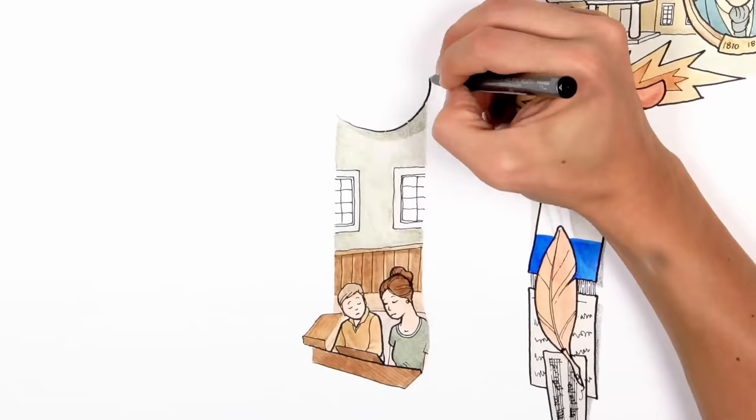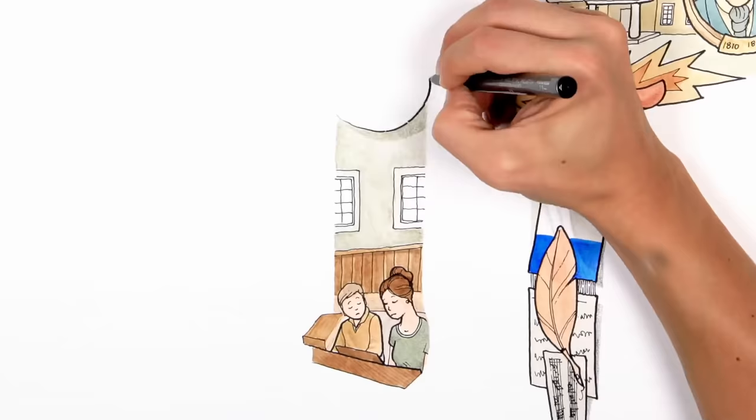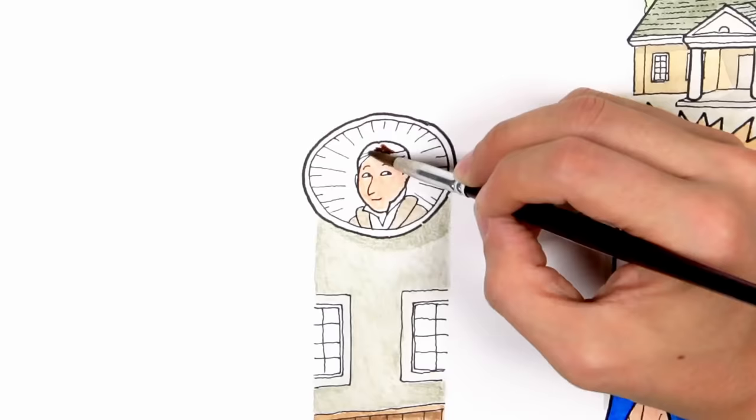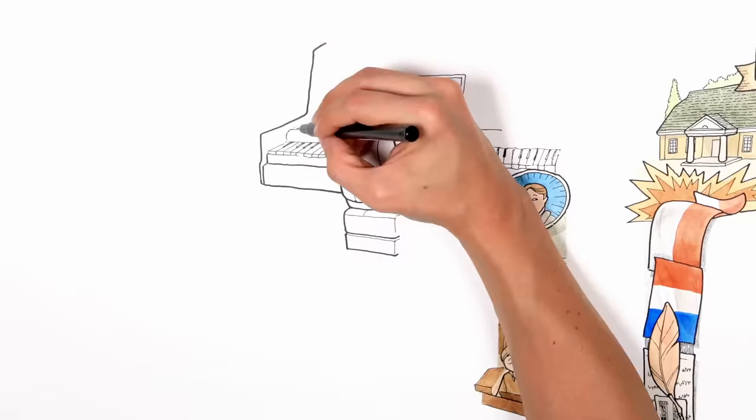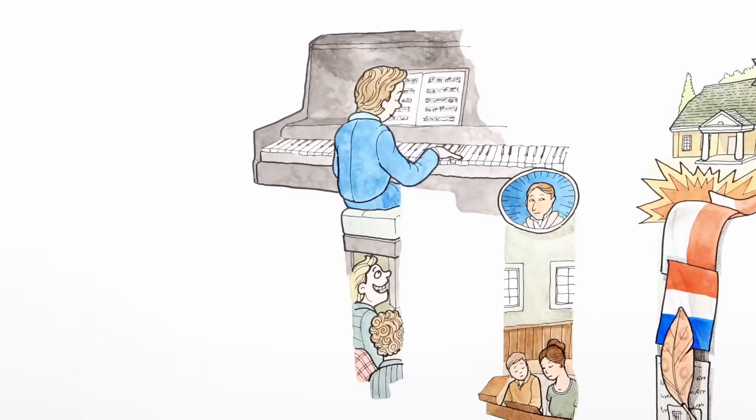Chopin started taking piano lessons from his older sister, Ludwika, when he was little. But soon he was taking private lessons from a famous Czech pianist, Wajczek Zilni, who recognized his pupil's great talent. At the early age of seven, Chopin was already composing his first pieces and was acclaimed in Warsaw as a child prodigy.